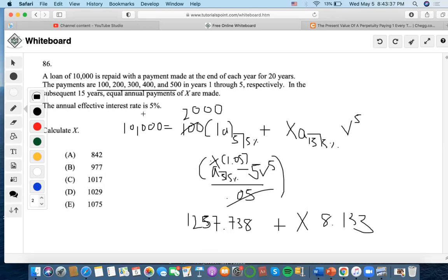We'll do 10,000 minus 1257.73. Now we're going to divide that by 8.133. And then we'll end up getting 1074.91 as the answer, which is closest to E.